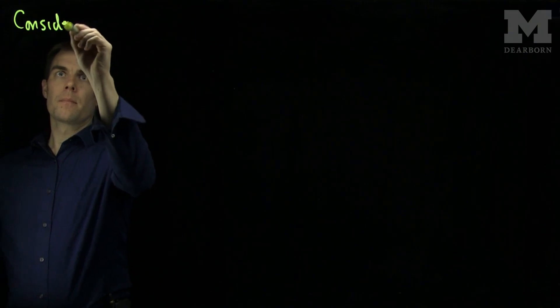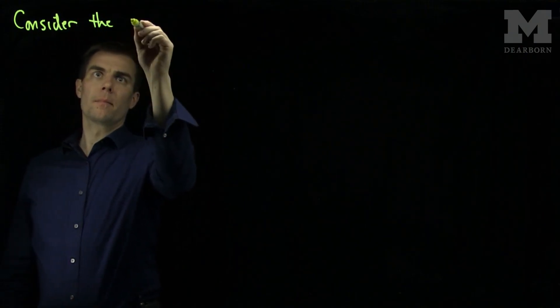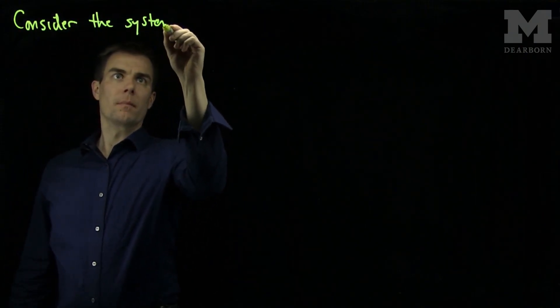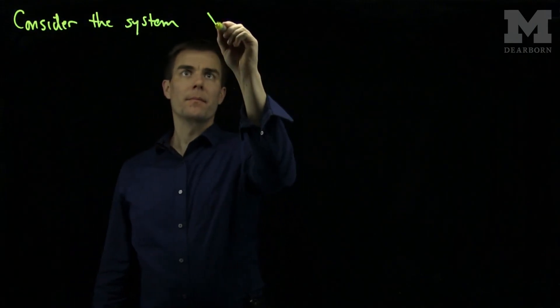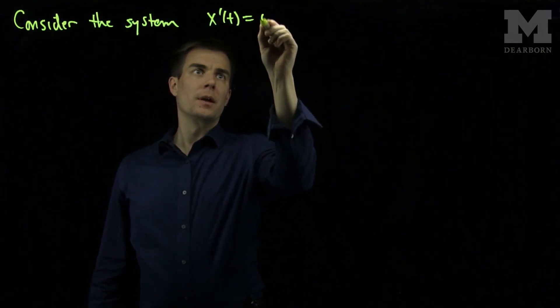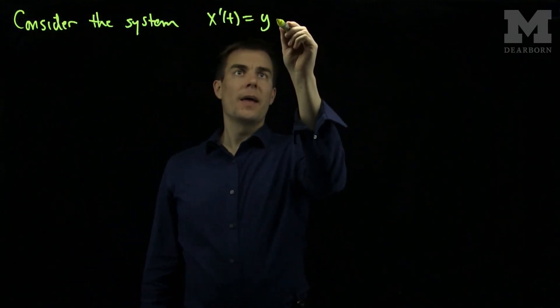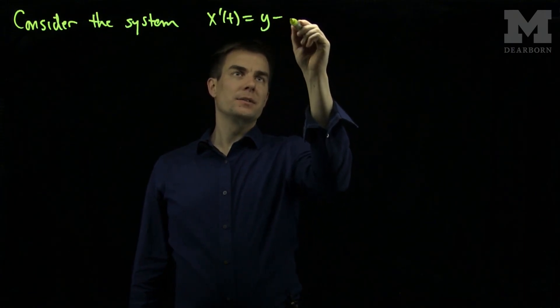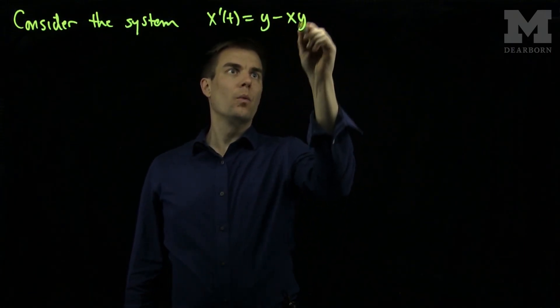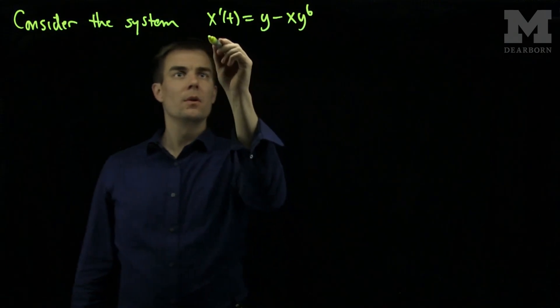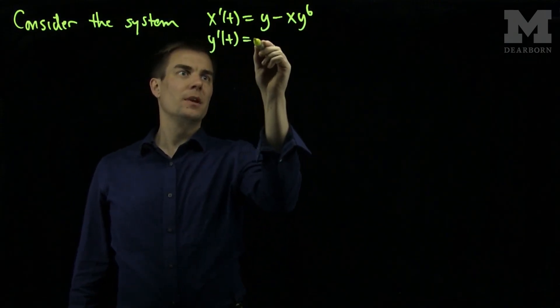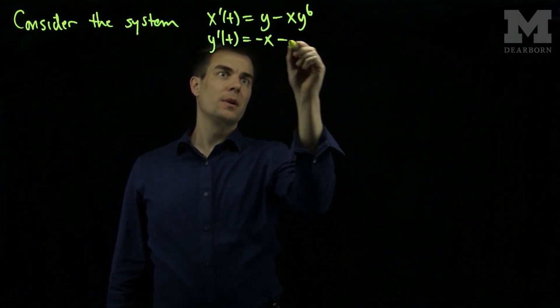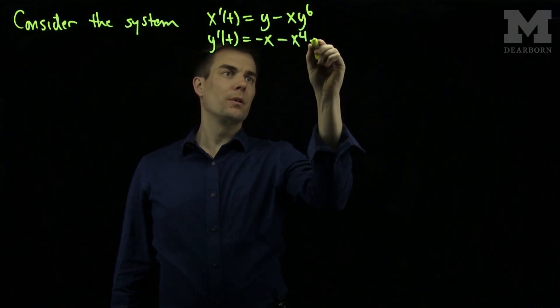x prime is y minus xy to the 6th power, and y prime of t is negative x minus x to the 4th times y.